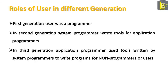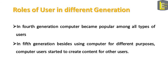From the first generation, the role of users in computers has always been changing. The first generation user was a programmer. In the second generation, system programmers wrote tools for application programmers. In the third generation, application programmers used tools written by system programmers to write programs for non-programmers or users. In the fourth generation, computers became popular among all types of users. And in the fifth generation, besides using computers for different purposes, computer users started to create content for other users.